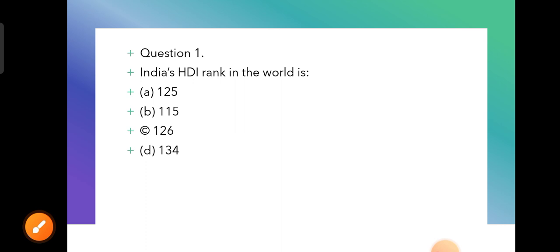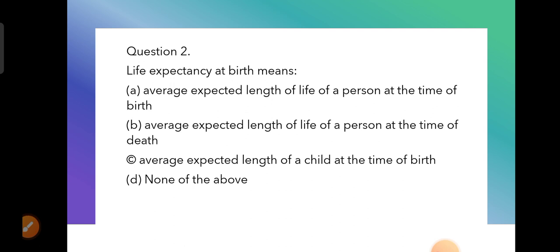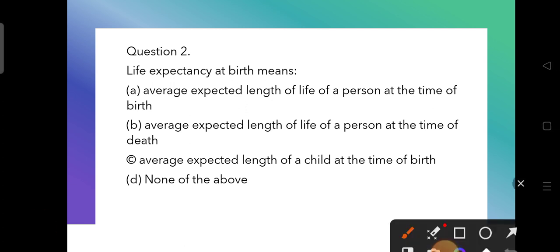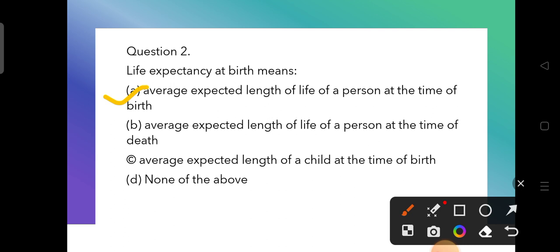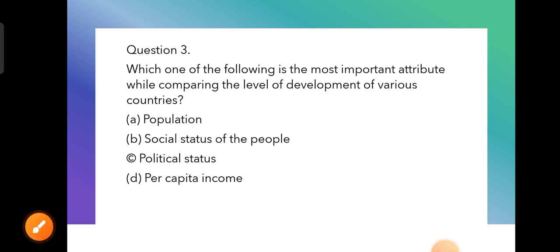Next question: Life expectancy at birth — jiven pratyasha — means the average expected length of life of a person at the time of birth. Option A is the correct answer here, as it refers to the time of birth, not the time of death.